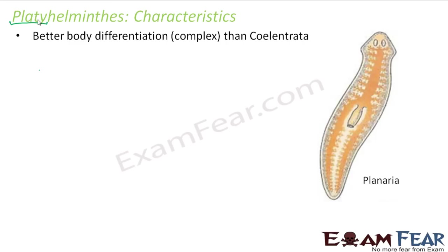Talking about symmetry, the body is bilaterally symmetrical. If you look at this example on the screen — this is Planaria, a Platyhelminth. If you try to divide it along this axis, it can be divided into a right and a left half which will be identical to each other. So the body is bilaterally symmetrical.